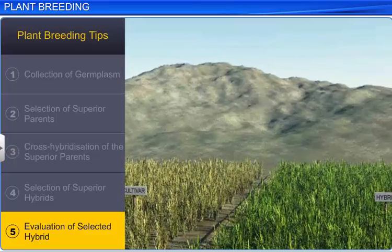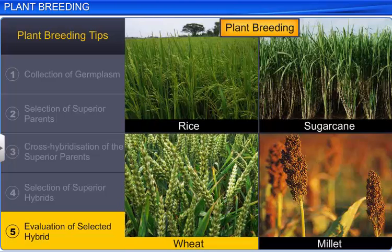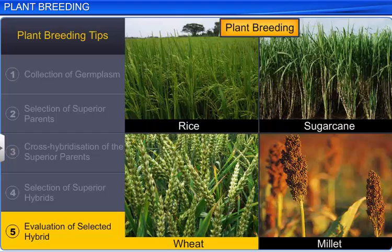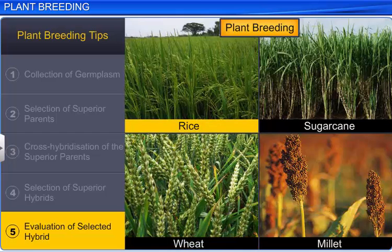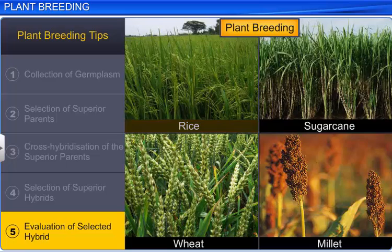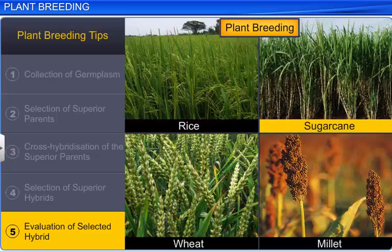This helps in comparing the performance of the hybrid against the best crop cultivar available in that area. In this way, plant breeding has increased the yield of many crops, including wheat, rice, sugarcane, and millet.